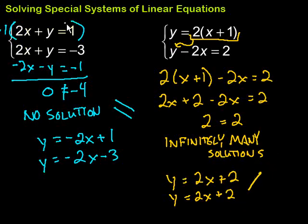Solving special systems of linear equations, situations where we lose the variables. Well, it all comes down to what we're left with after we lose the variables. In this case, we were left with something that is not true, which means there's no solution. This is where we have parallel lines. They're never going to cross.